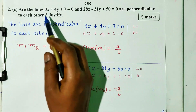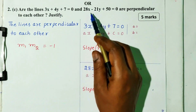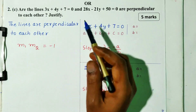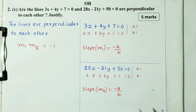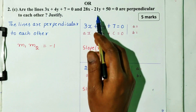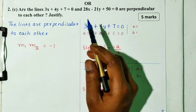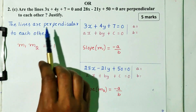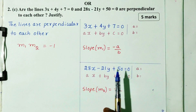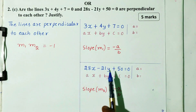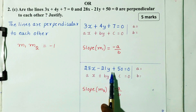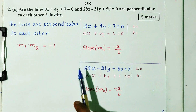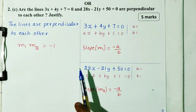Question number 2c: Are the lines 3x plus 4y plus 7 equal to 0 and 28x minus 21y plus 50 equal to 0 perpendicular to each other? Justify. We will justify by checking the slopes. The condition for perpendicular lines is m1 into m2 equals minus 1.